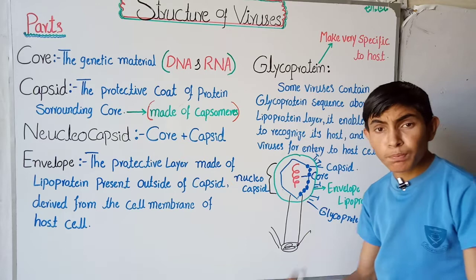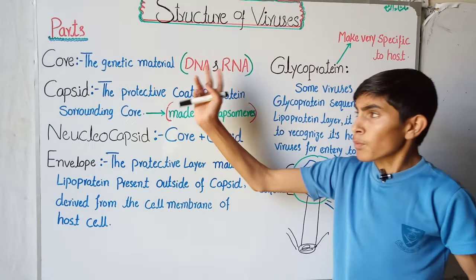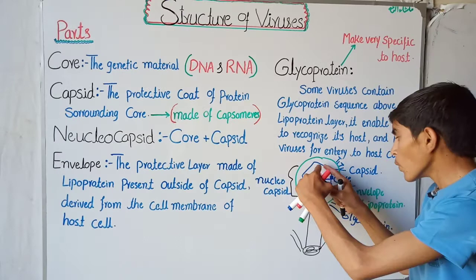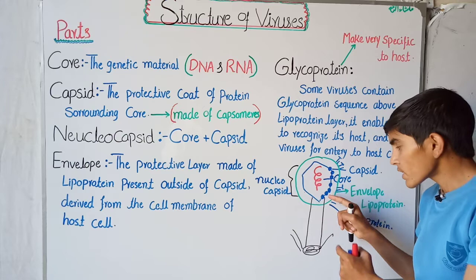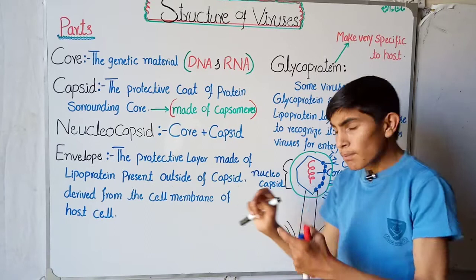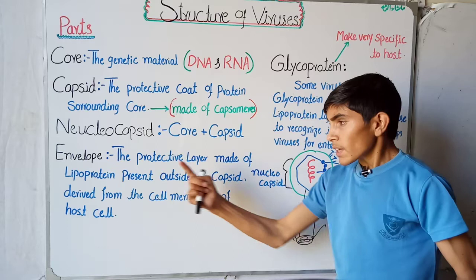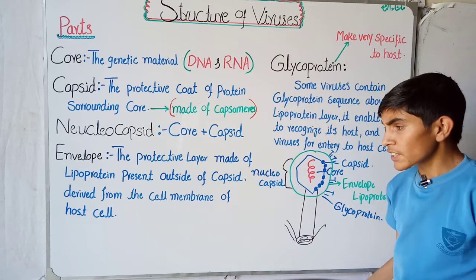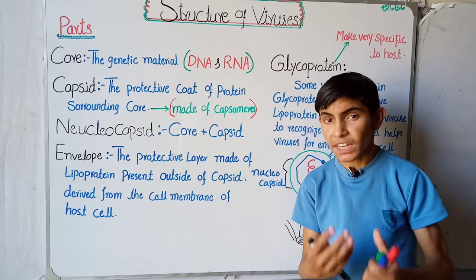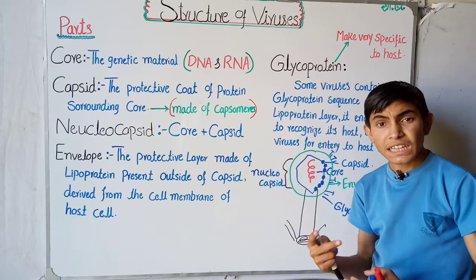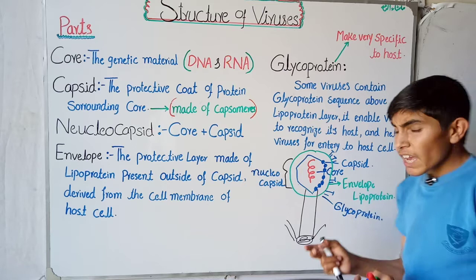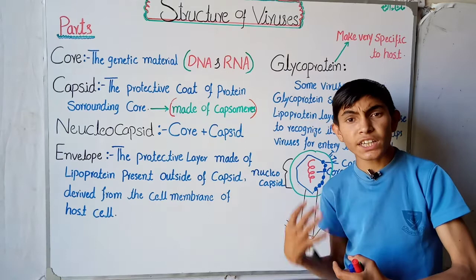To revise: the structure of virus consists of the core — the genetic material present inside; the capsid — the protective cover surrounding the core, made up of capsomeres; the nucleocapsid — the combination of core and capsid; the envelope — made of lipoprotein derived from the cell membrane, helping protect the virus from the immune system; and the glycoprotein layer — which makes the virus specific to its target tissue.